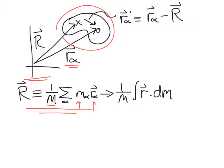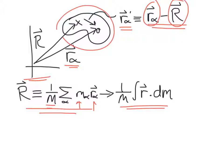This represents the mass-weighted average position for the system. If we have a system made not of discrete particles but continuous particles — a solid system — this sum turns into an integral. We can then define the position of any element within the system relative to the center of mass using the vector r_alpha-prime, where r_alpha-prime equals r_alpha minus the position of the center of mass.